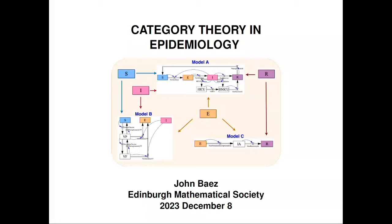There's a modeling tradition called system dynamics, which was invented by an economist at MIT, in which dynamical systems are modeled using diagrams called stock flow diagrams. These diagrams are used in a lot of different areas of modeling, like economics, population biology, epidemiology, and so on. There are things called stocks, which are these boxes, and you think of each box as having some number of things in it — in this case, people, but it could be anything.